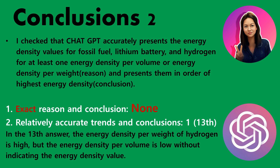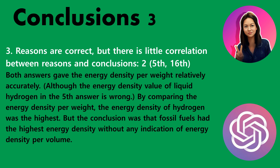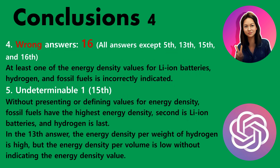The conclusions are as follows. First, exact reason and conclusion: none out of 20. Second, relatively accurate trends and conclusions: just one — in the 13th answer, the energy density per weight of hydrogen is high but the energy density per volume is low, without indicating the energy density value. Third, reasons are correct but there is little correlation between reasons and conclusions: two answers. Both answers gave the energy density per weight relatively accurately, although the energy density of liquid hydrogen in the fifth answer is wrong. By comparing energy density per weight, hydrogen was highest, but the conclusion stated fossil fuels had the highest energy density.